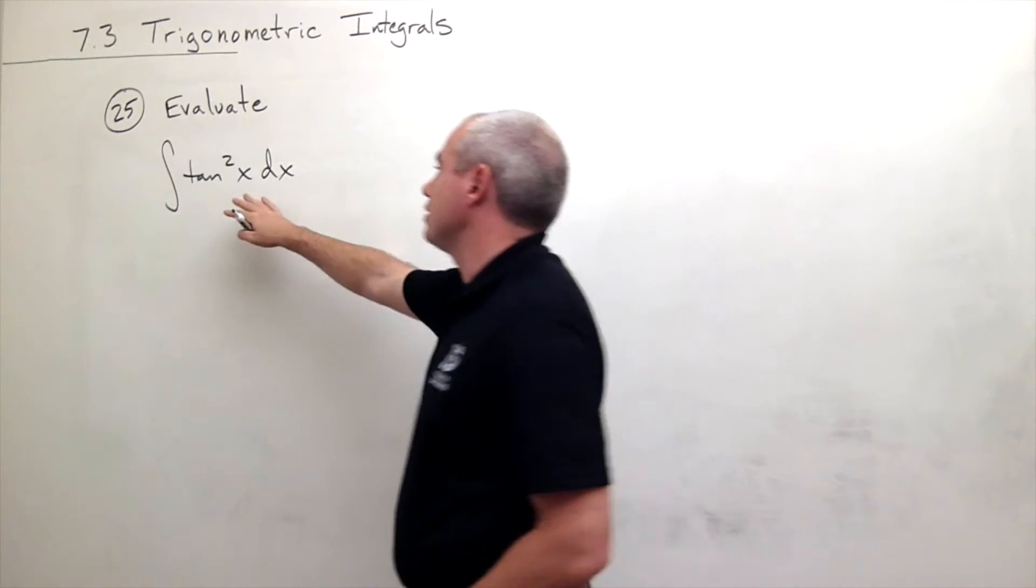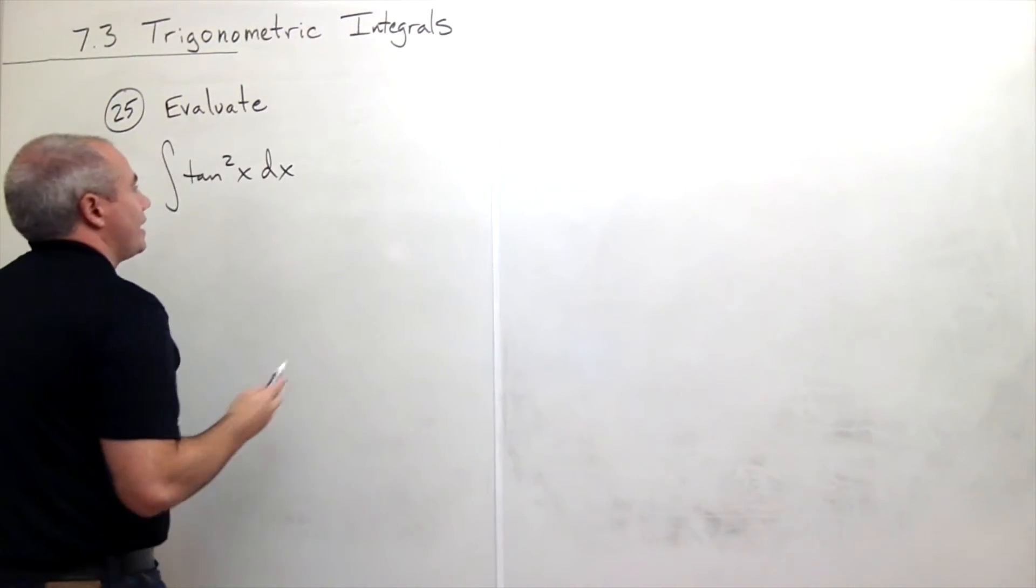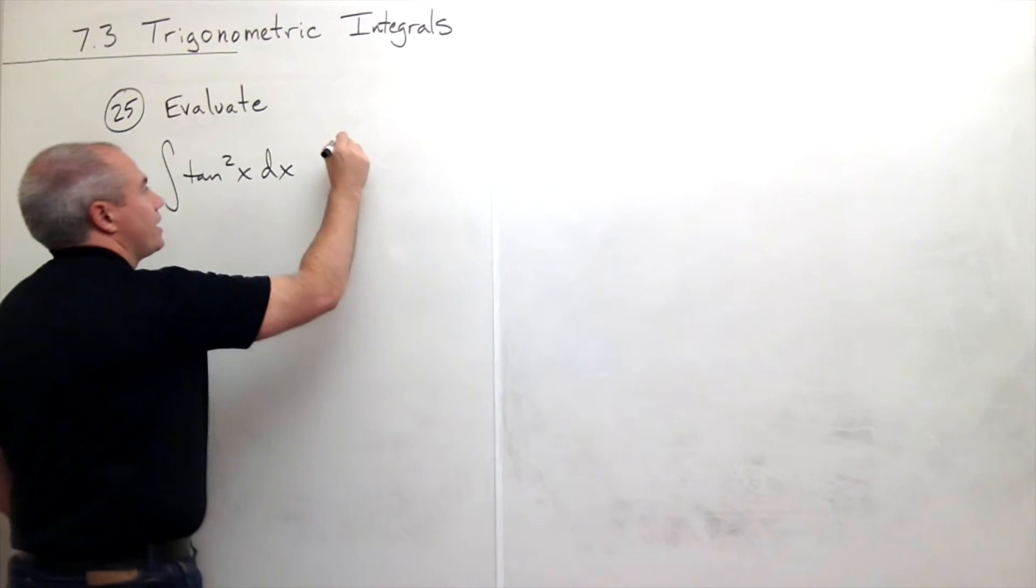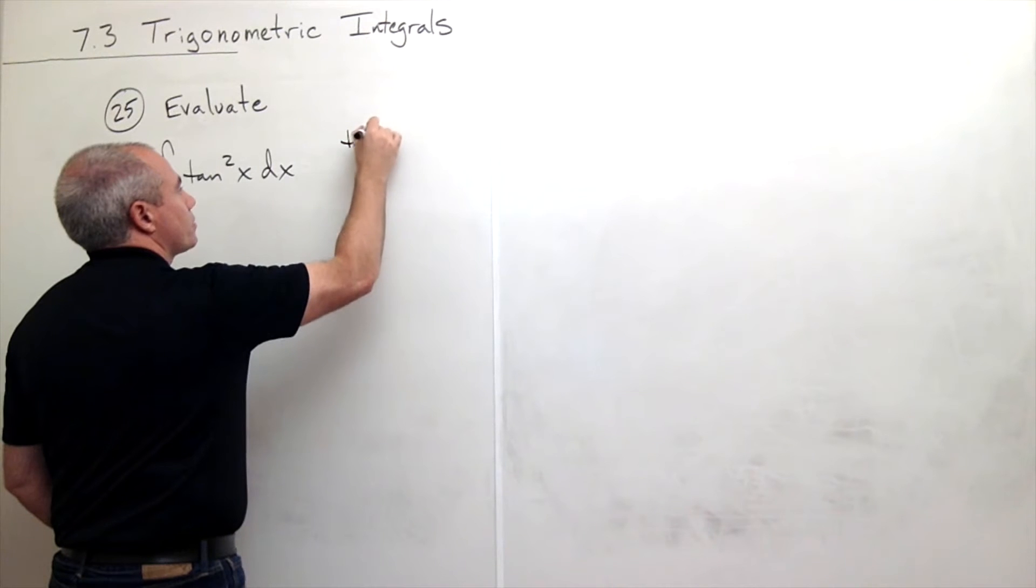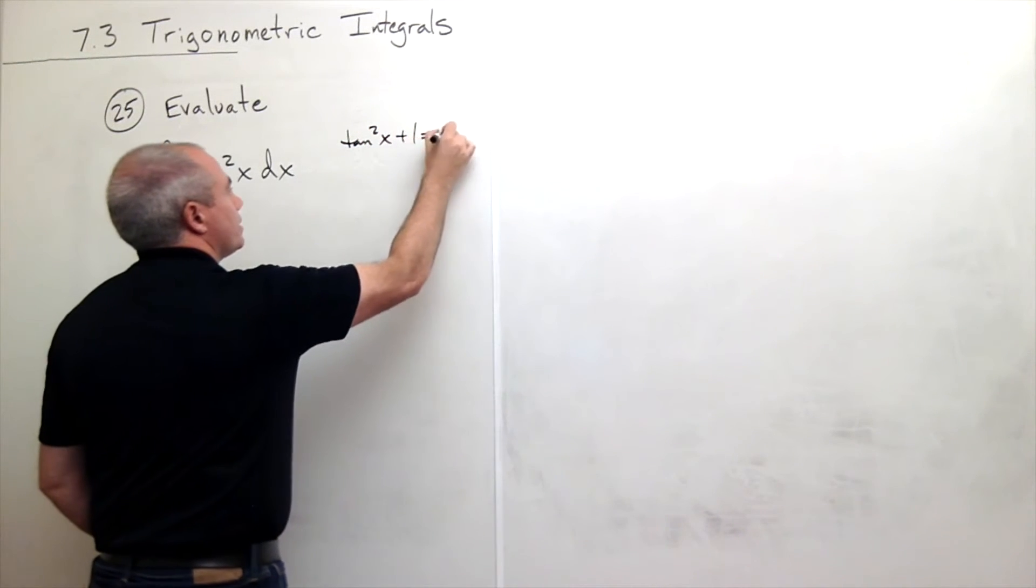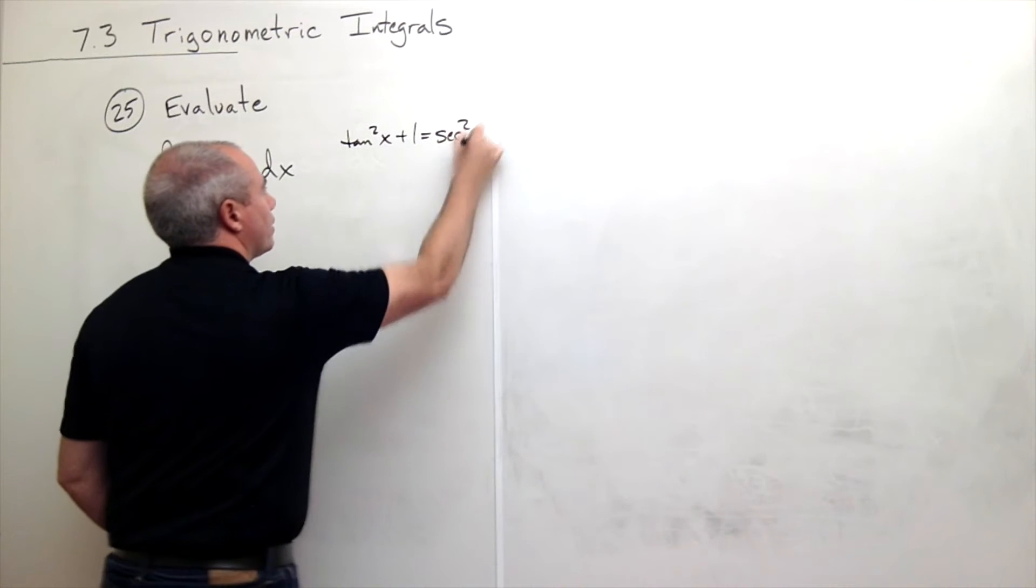What I'm going to do is I'm going to use one of my trig identities, and the identity I want to use in this case is that tangent squared of x plus one is secant squared of x.